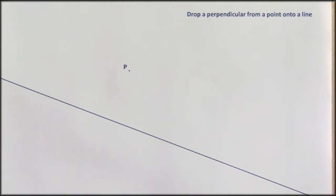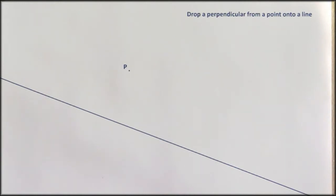Here's another construction that depends upon the perpendicular bisector to work. We're going to drop a perpendicular from a point onto a line. I've got a point here marked P and a straight line, and I'm going to draw a line which is perpendicular to the straight line which goes through P. That's called dropping a perpendicular.